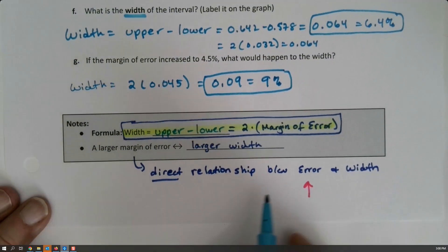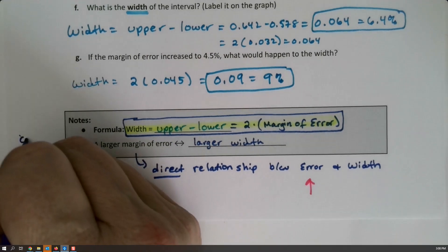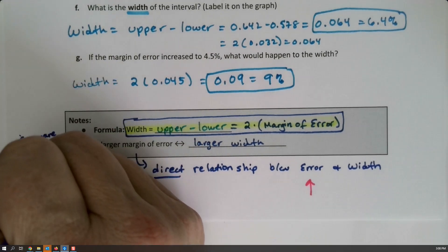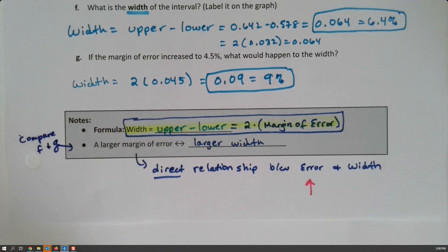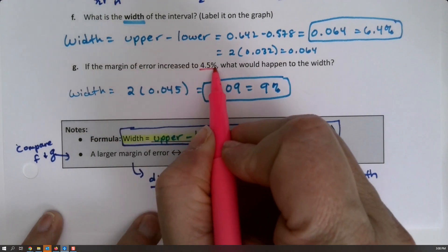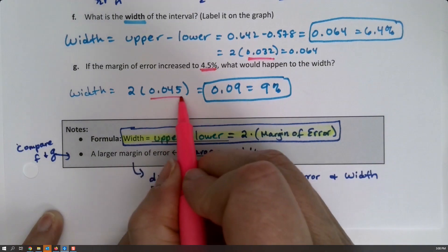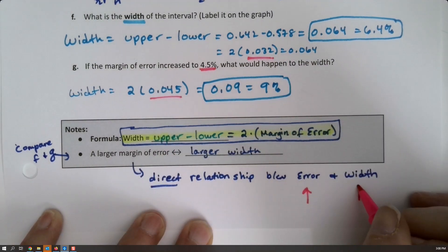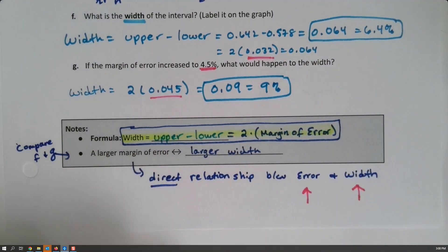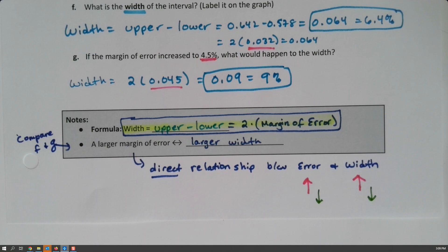Okay, so what are we noticing when we compare f and g? What do we notice? Well we notice that they have a direct relationship. When the error went up, the error went from 0.032 to 0.045. When that happened, the width went up. By the same token, if the error goes down the width will go down. They have a direct relationship, they go together.